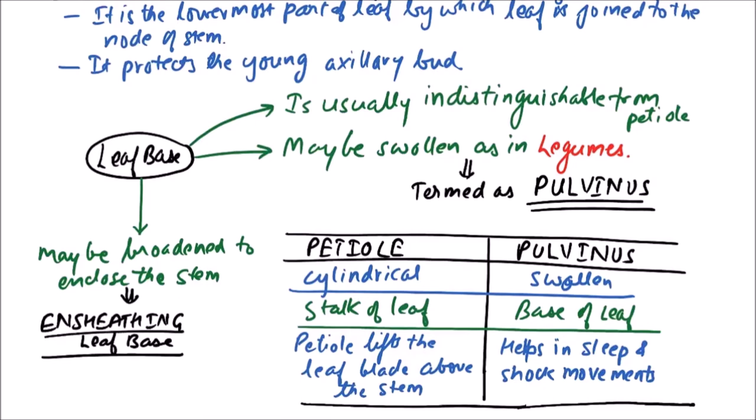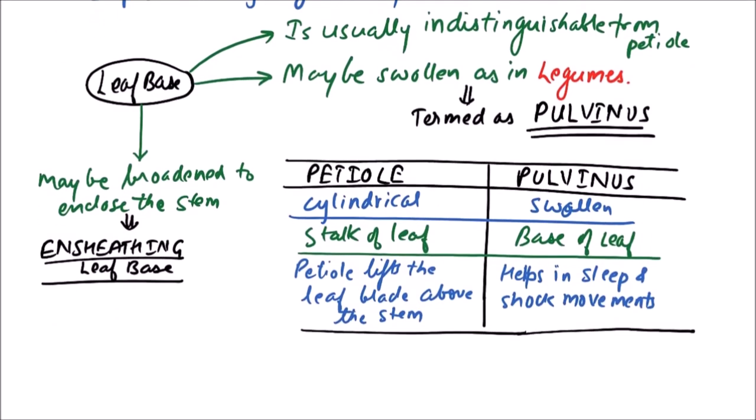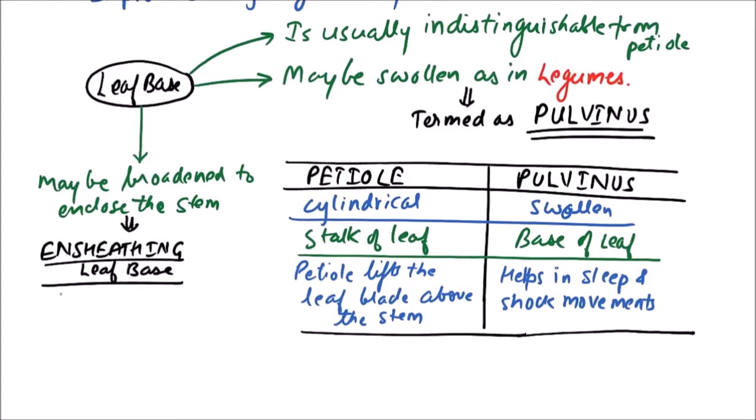This ensheathing leaf base may be of two types. If the stem is enclosed completely, then it is termed as amplexicaul.